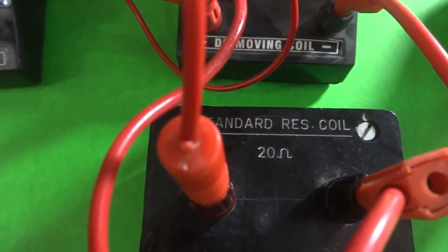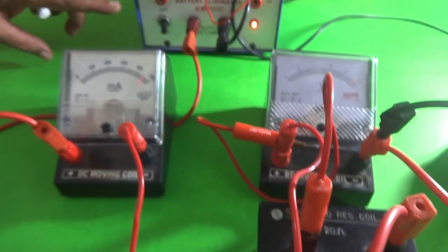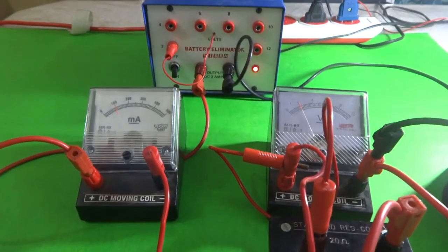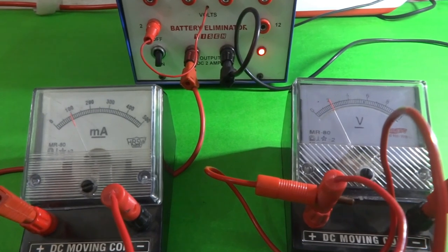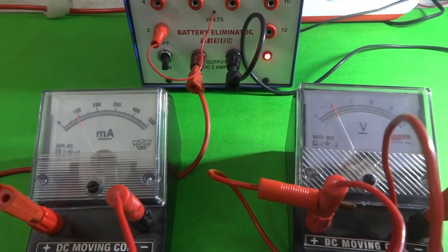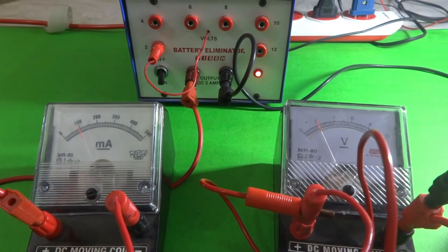It is a standard resistance coil which is 20 ohms and we got all the time the ratio of this V by I is 20. From this as V by I is constant, we can say V is directly proportional to I or V is equal to IR.